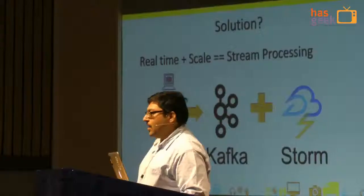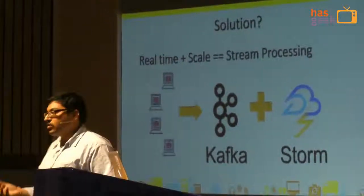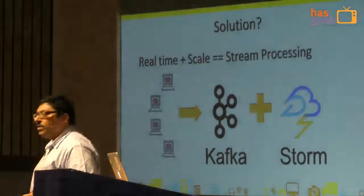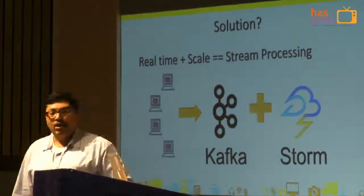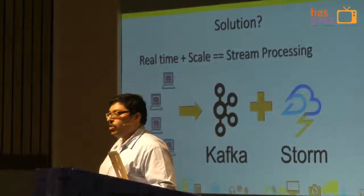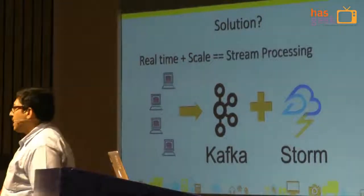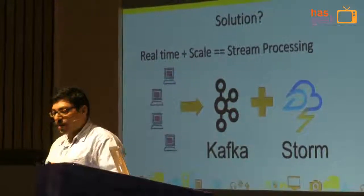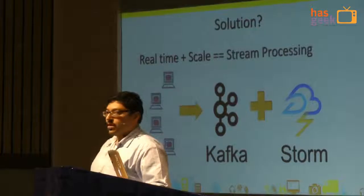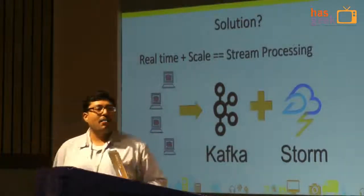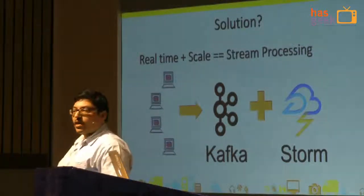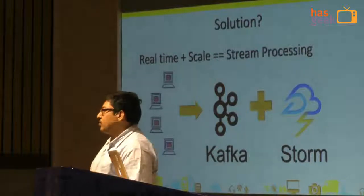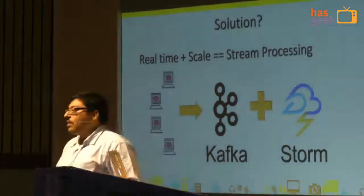Real-time plus scale equals stream processing, which equals Kafka plus Storm — that's the standard set of technologies. Kafka is a message queue built by LinkedIn for a similar use case: gathering lots of events from a large array of servers and doing analytics. It's reliable, distributed at its core, with built-in partitioning. With the 0.8 release they also added replication, building in more reliability. When you create a topic, you create partitions and distribute them over multiple brokers.